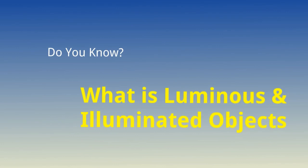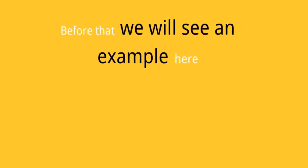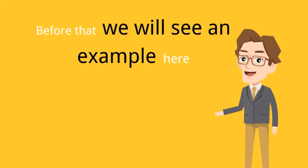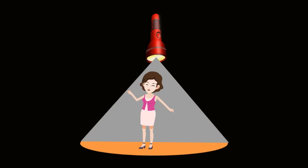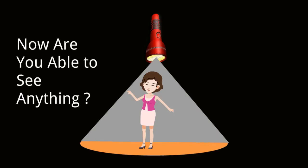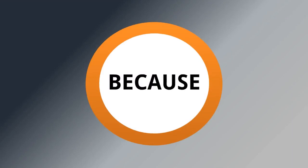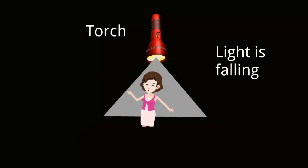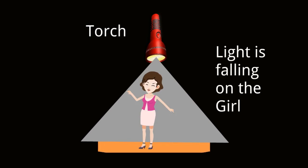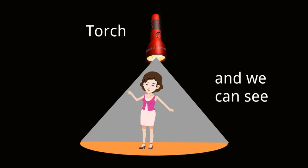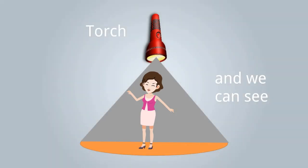Do you know what luminous and illuminated objects are? Before that, we will see an example. This is a very dark space — are you able to see anything here? No. Now are you able to see anything? Yes, because there is a torchlight and light from the torch is falling on a girl, and we are able to see her.